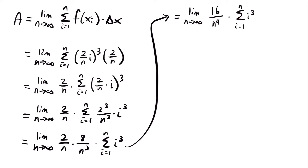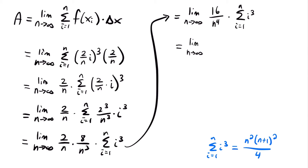Here's where our knowledge of summation formulas comes in. The sum from i equals 1 to n of i³ equals n²(n+1)² divided by 4. We substitute this formula in for the sum in our limit, giving us the limit as n approaches infinity of 16/n⁴ times n²(n+1)²/4. Since n is approaching infinity here, we use the formula with n and don't plug in any specific value.